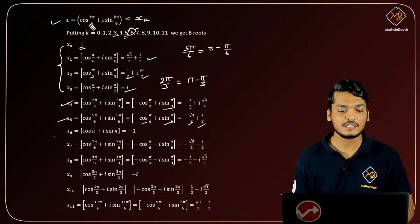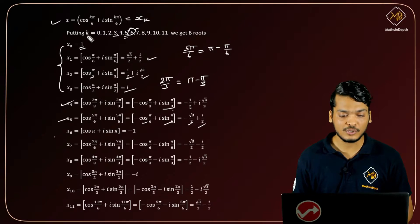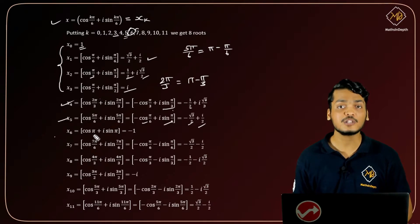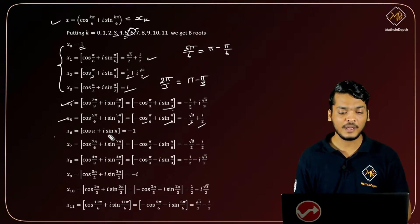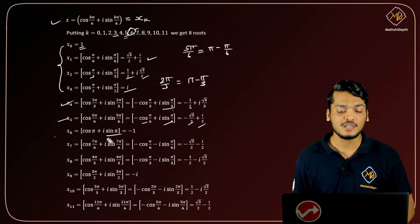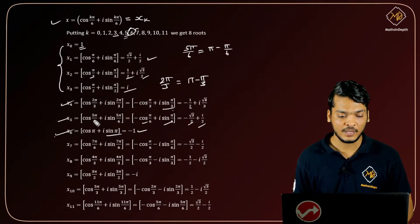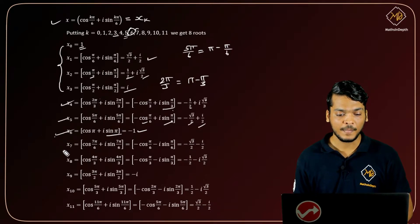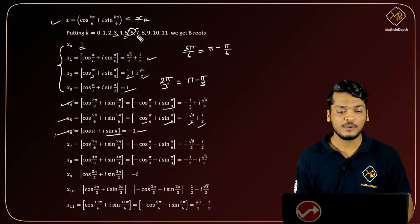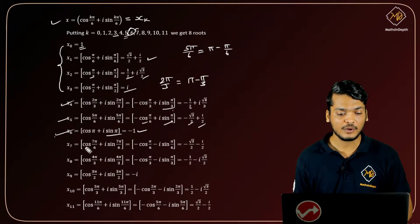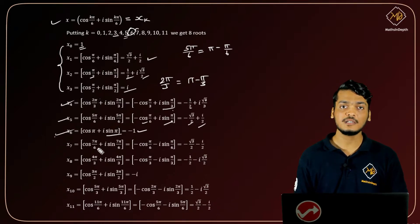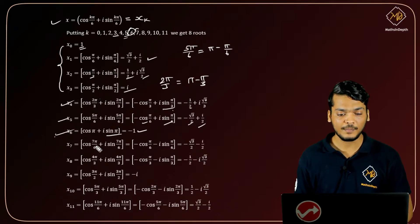For k = 6: the 6s cancel giving cos(π) + i·sin(π). Since sin(π) = 0 and cos(π) = -1, the 7th root is -1. For k = 7: we get cos(7π/6).